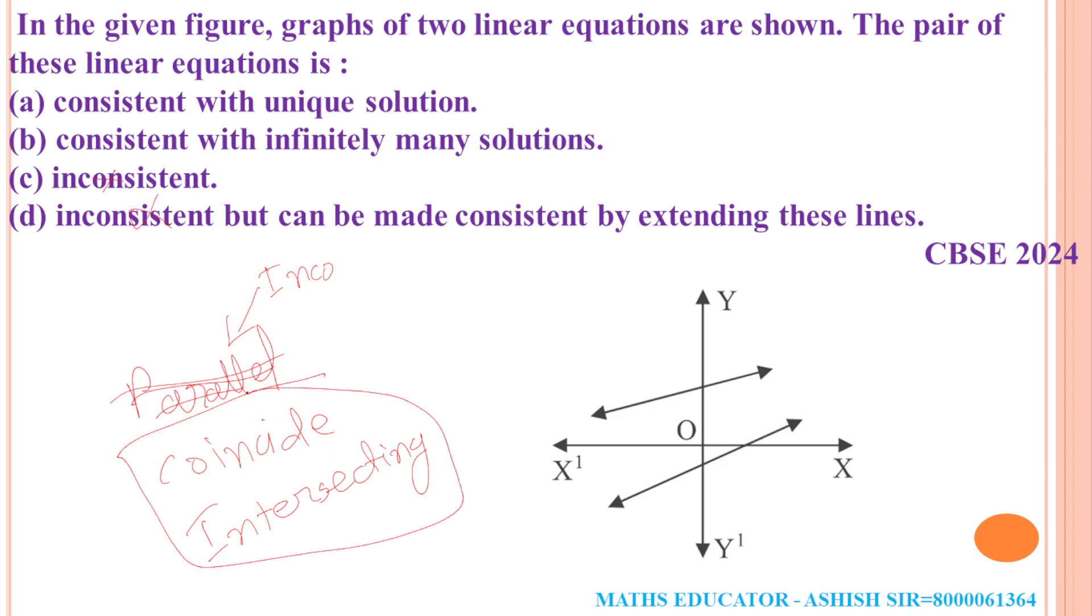Now we have these two options. Is this pair of lines coinciding? It is not coincide. When two lines coincide, these two lines overlap each other. This is not coincide - both lines are different. When two lines coincide, then consistent with infinite solutions we get. So it is not coincide, and option B is also rejected.